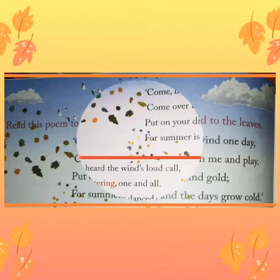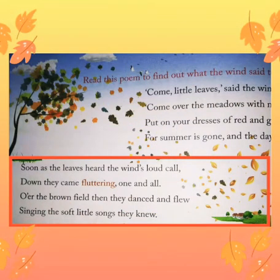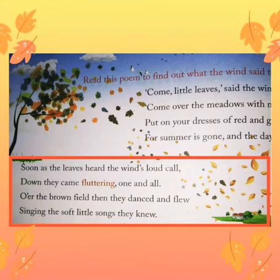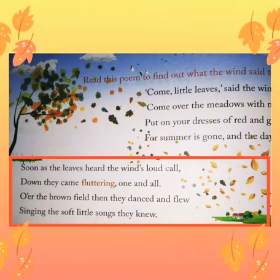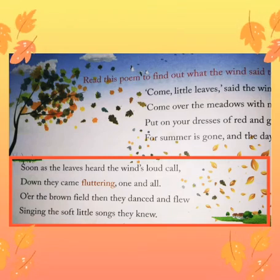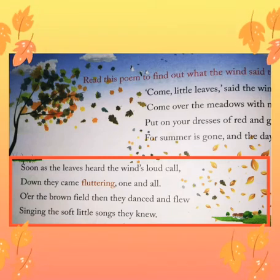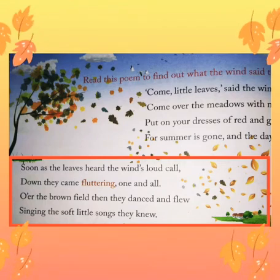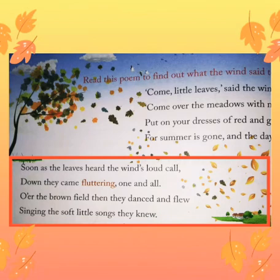Move to second stanza. Soon as the leaves heard the wind's loud call, down they came fluttering one and all. Over the brown fields then they danced and flew, singing the soft little songs they knew. So what is the meaning of fluttering? Fluttering means moving in an irregular motion. That means they are making the sound and they were dancing and falling down.